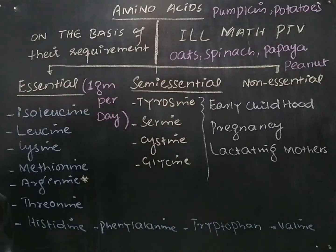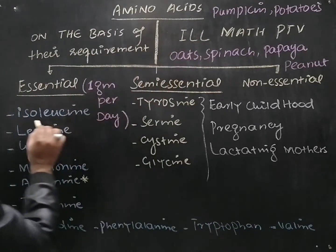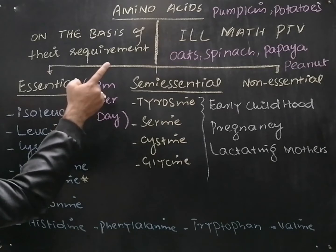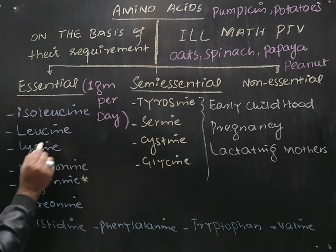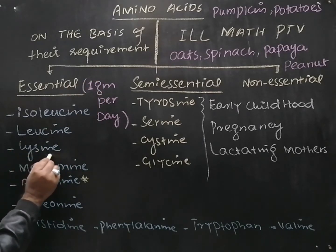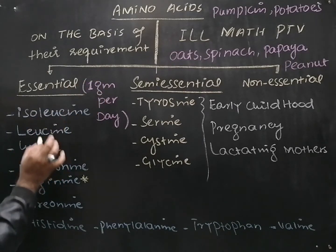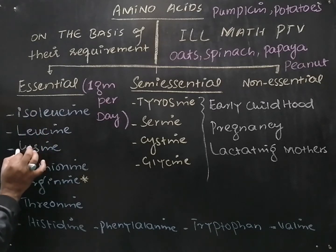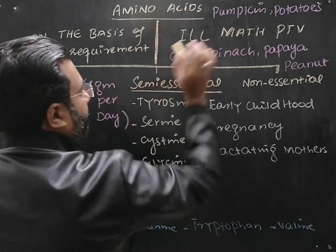For example, I stands for isoleucine, L for leucine, and the next L for lysine. So these three amino acids — their first letters make the word ILL.